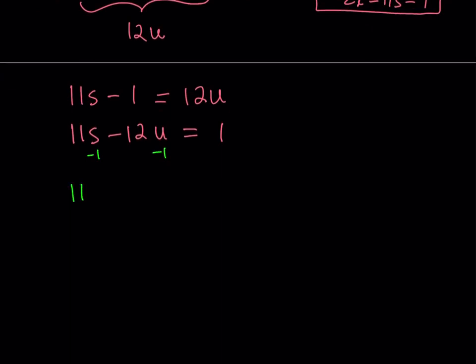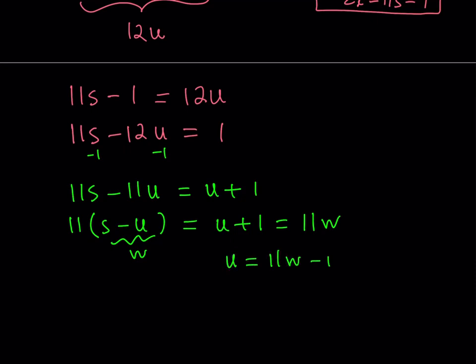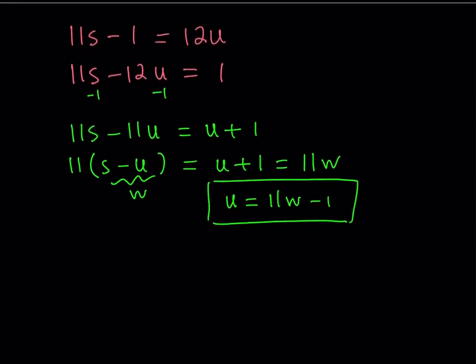Here's what I'm going to do. I'm going to write this equation as 11s minus 11u minus u equals 1, and I want to put the u on the other side. Notice that the left-hand side is a multiple of 11. What is that supposed to mean? Well, it just means that s minus u can be replaced with another variable. Let's call that w. And now I got that u plus 1 is a multiple of 11.